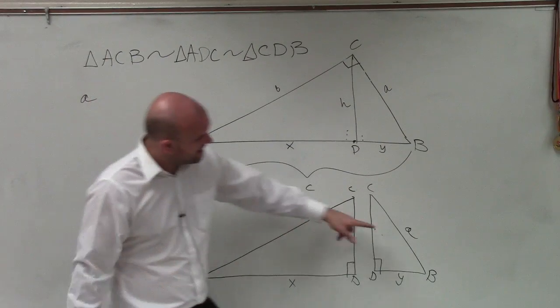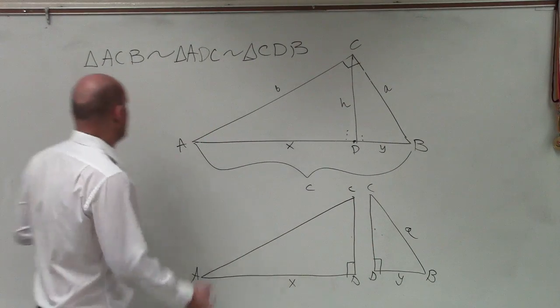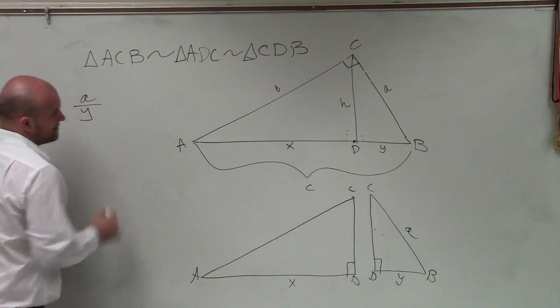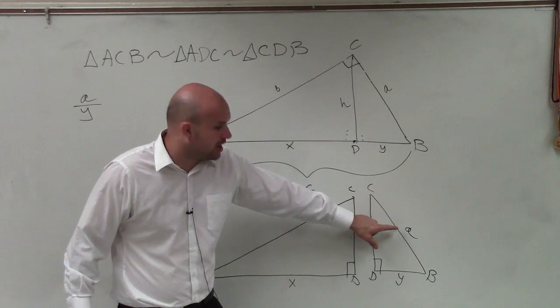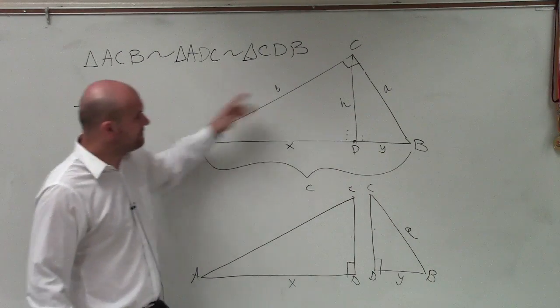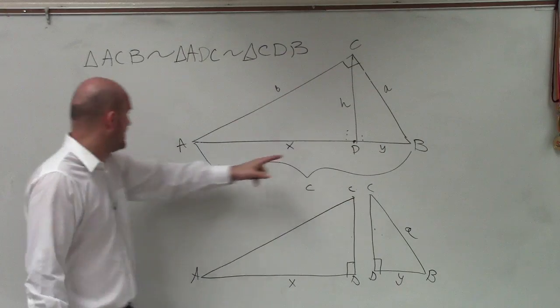So if I want to find a, I can say a is to y. A is to y as—now, a represents the hypotenuse of the big triangle. What's the length of my hypotenuse?